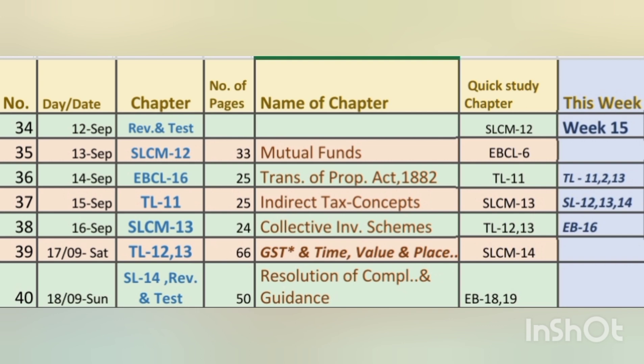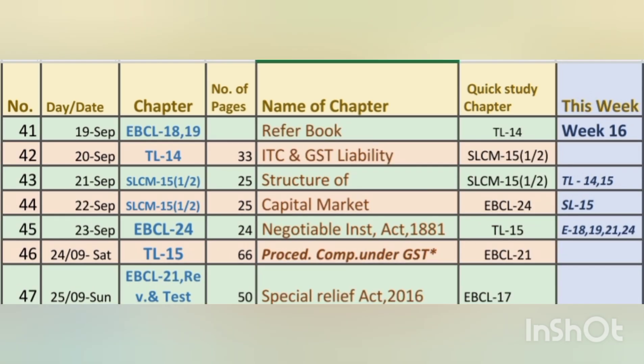For the 15th week we will be studying three chapters in Tax Laws, one chapter in EBCL, and three chapters in SLCM. The GST time, value, and place of taxable supply chapters are given on Saturday — give more importance to these as they are easy scoring parts in Tax Laws. For the 16th week, two chapters in Tax Laws, three to four chapters in EBCL, and the 15th chapter of SLCM — Structure of Capital Market — for two days, covering primary market and secondary market. The last two chapters of SLCM are important and easy scoring.